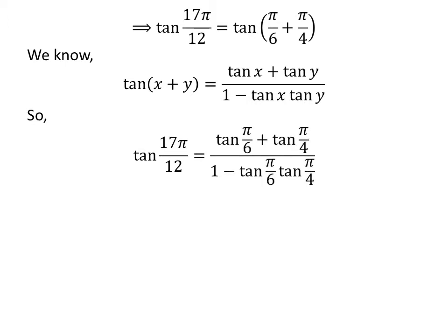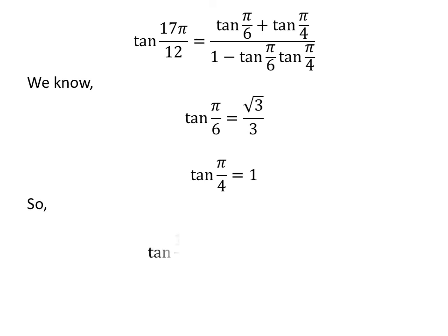Application of the above identity gives us tangent of 17 times pi upon 12 is equal to (tangent of pi upon 6 plus tangent of pi upon 4) upon (1 minus tangent of pi upon 6 times tangent of pi upon 4). As we know, tangent of pi upon 6 is equal to square root of 3 upon 3, and tangent of pi upon 4 is equal to 1. So we plug in these values to get tangent of 17π/12 equal to (√3/3 + 1) upon (1 minus √3/3 times 1).